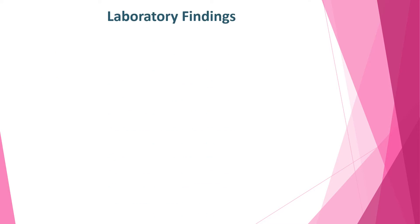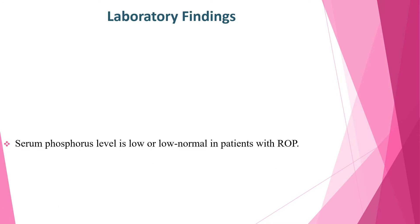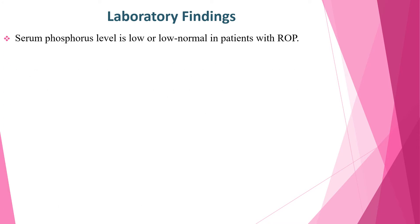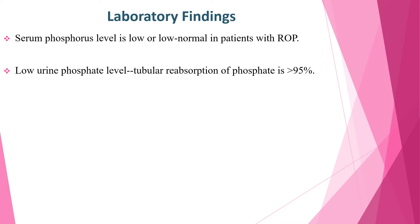Regarding laboratory findings in rickets of prematurity: because of inadequate intake, the serum phosphorus level is low or low-normal in patients with rickets of prematurity. The renal response is appropriate, with conservation of phosphate leading to a low urine phosphate level. Tubular reabsorption of phosphate is more than 95 percent, and most patients with rickets of prematurity have normal levels of vitamin D unless there has been inadequate intake or poor absorption.